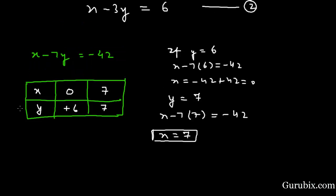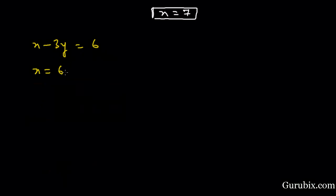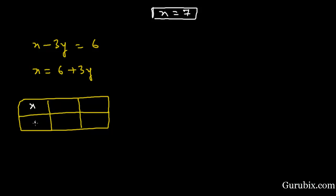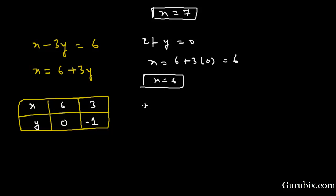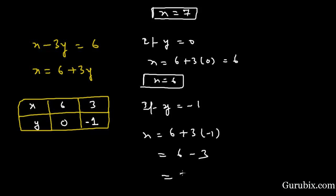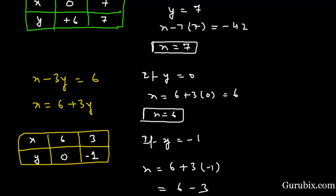Now we take Equation 2, x minus 3y equals 6, and write x equals 6 plus 3y. We draw a table: if y equals 0 then x equals 6; if y equals minus 1 then x equals 6 plus 3 times minus 1, which is 6 minus 3 equals 3. So the coordinate pairs for line 2 are obtained.